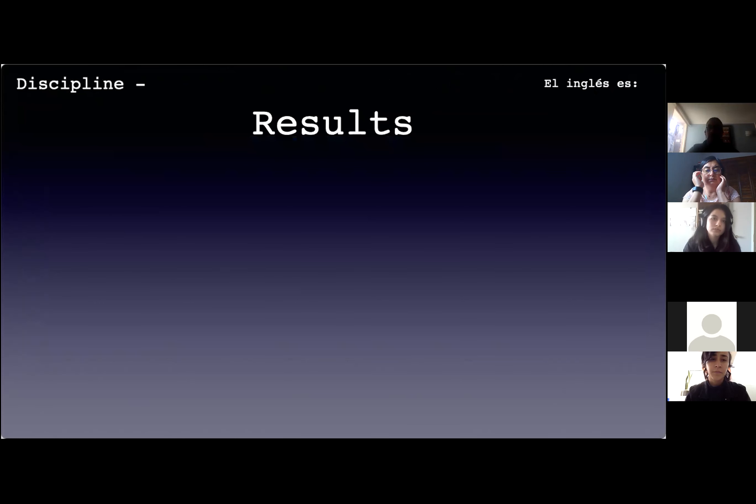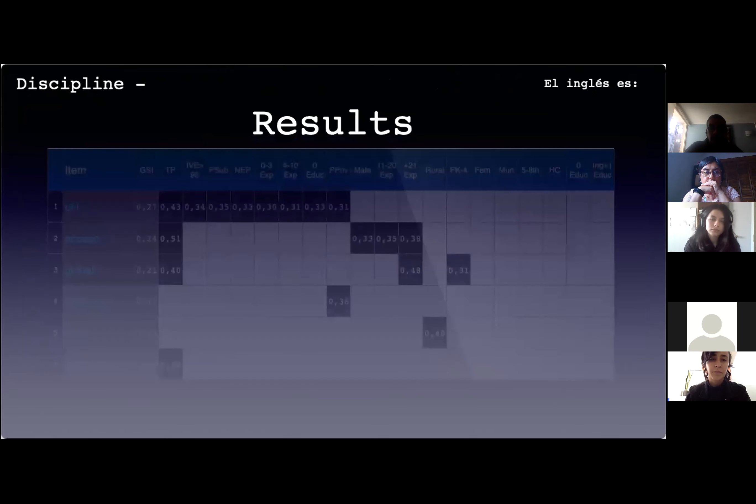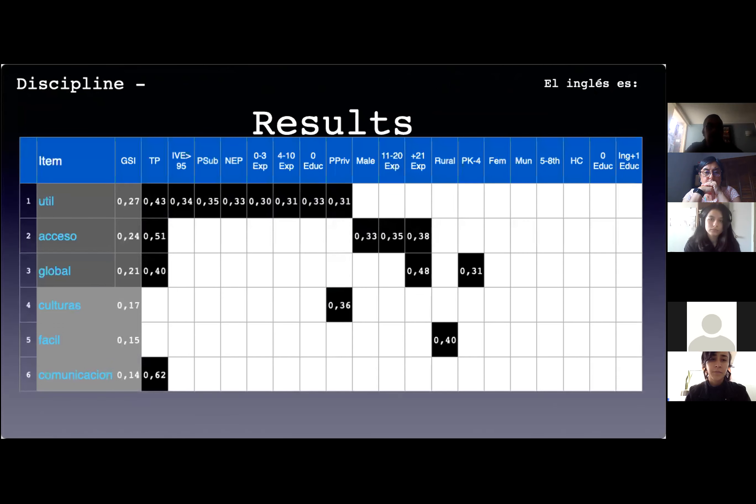When the social representation of learning English is seen from a disciplinary perspective, we can observe that no item presents a significantly strong item that could be included in the central kernel area of the social representation. Items like ÚTIL, ACCESO, and GLOBAL fall in the closer area to the central representation, while CULTURAS, FÁCIL, and COMUNICACIÓN are located further away, being still relatively significant.